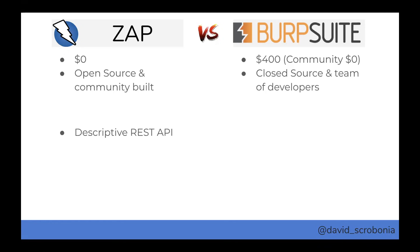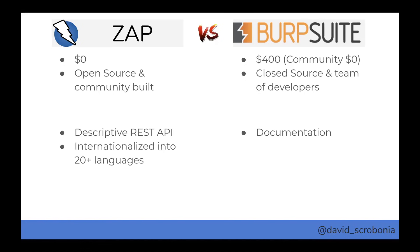A few things that are different — more apples to oranges than apples to apples. When talking about automation or CI/CD, the REST API for ZAP is the place to go — it's extremely powerful. On the flip side, Burp has really strong documentation, which I think is the reason it's hard to switch to ZAP from Burp. ZAP is also internationalized into over 20 different languages, with a strong focus on making it available across many countries.